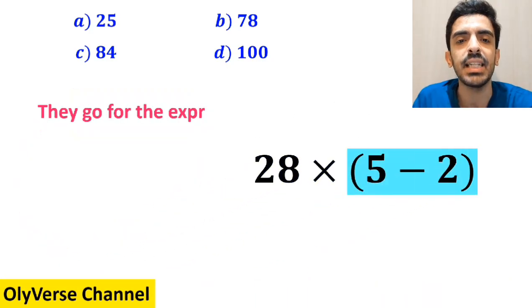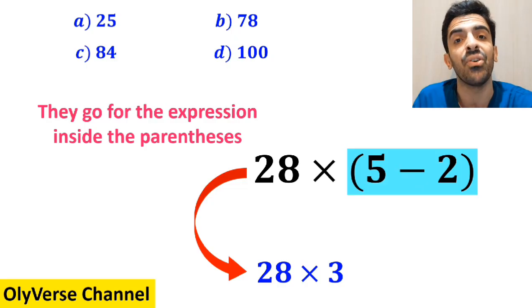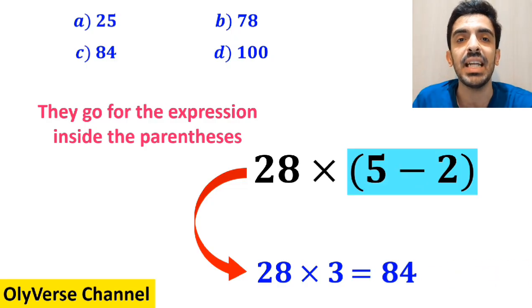And the final step, they go for the expression in parentheses and replace it with 28 × 3, which ultimately gives them the answer 84.